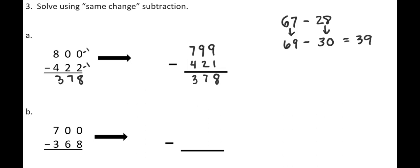Let's do another example. The next problem is 700 minus 368. Again, I'm going to subtract 1 from each number: 700 minus 1 is 699, and 368 minus 1 is 367. Now I can subtract without decomposing: 9 minus 7 is 2, 9 minus 6 is 3, and 6 minus 3 is 3. So the answer to 700 minus 368 is 332. By using Same Change Subtraction, we make the problem a lot easier to solve, and we want to encourage students to use these efficient strategies.